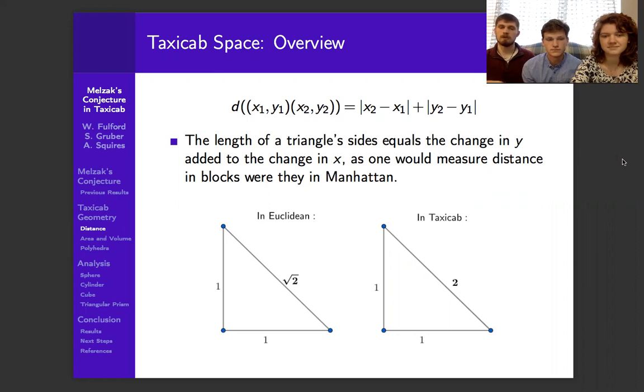So you can see in these two triangles, one of them is in Euclidean. The shortest distance between those two points is square root of two. But in taxicab, you have to go over and then up. So the distance between it is actually two.